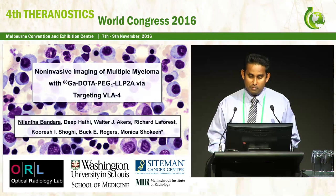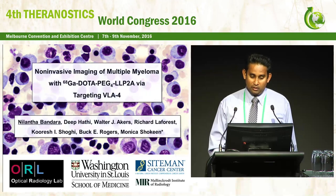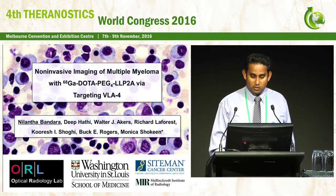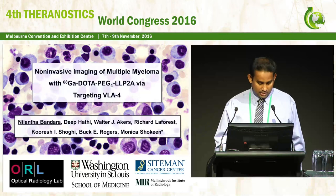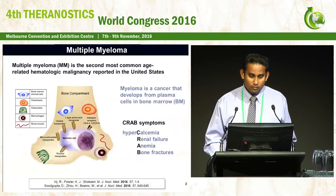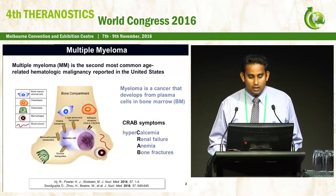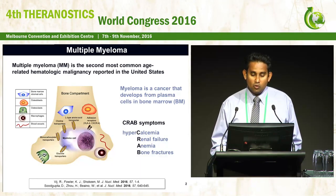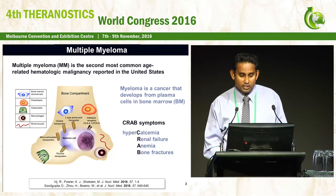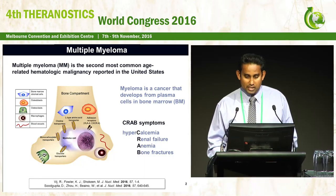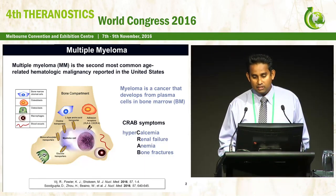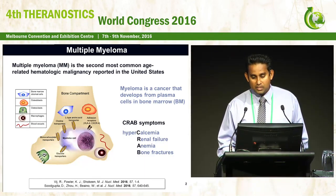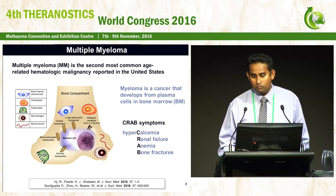Today I'm going to talk about imaging multiple myeloma using a specific biomarker with gallium-68. Multiple myeloma is the second most common age-related hematologic malignancy reported in the United States. It is a cancer that develops from the plasma cells in the bone marrow.